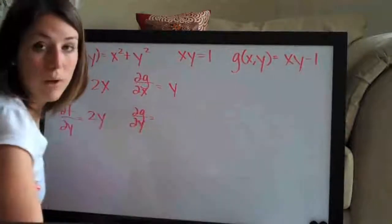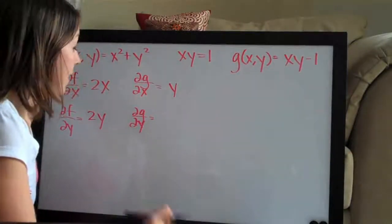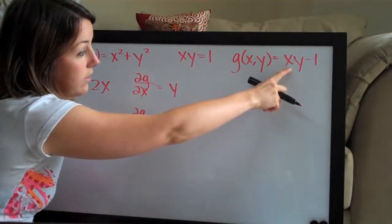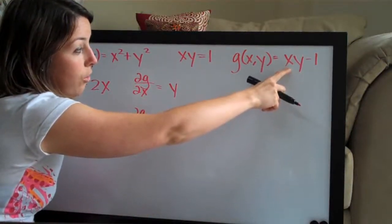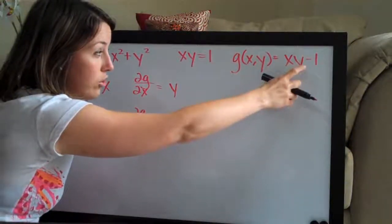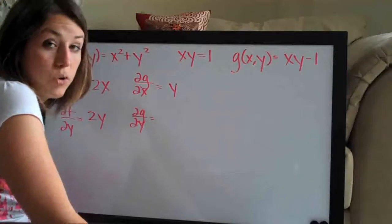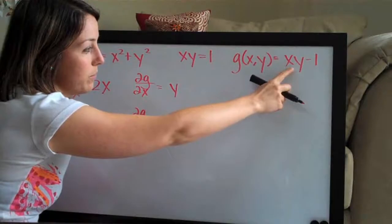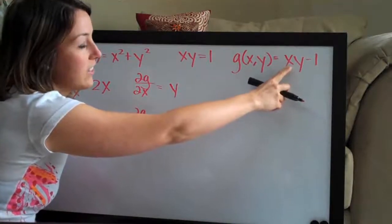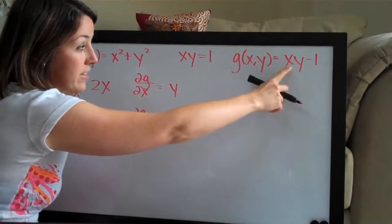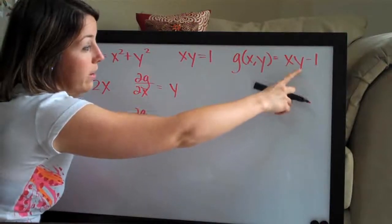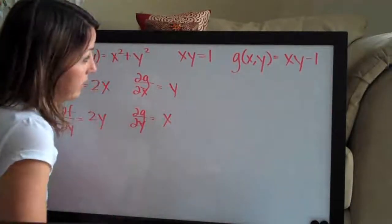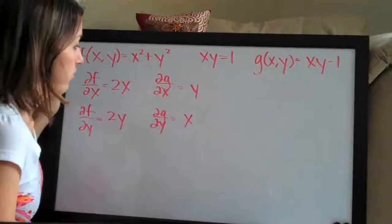Of course the constant 1 goes away. Then with respect to y, we treat x as the constant — pretend x is the number 2. We get 2y, and the derivative of 2y is just 2, which is actually x. So x acts like the coefficient on y, and our derivative with respect to y is just x. Again, the 1 goes away because it's a constant.